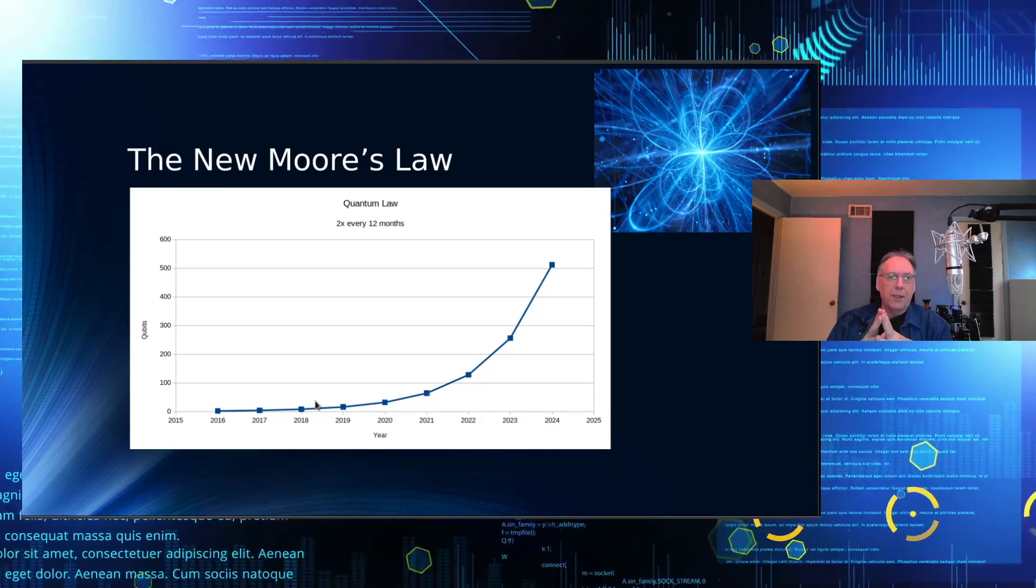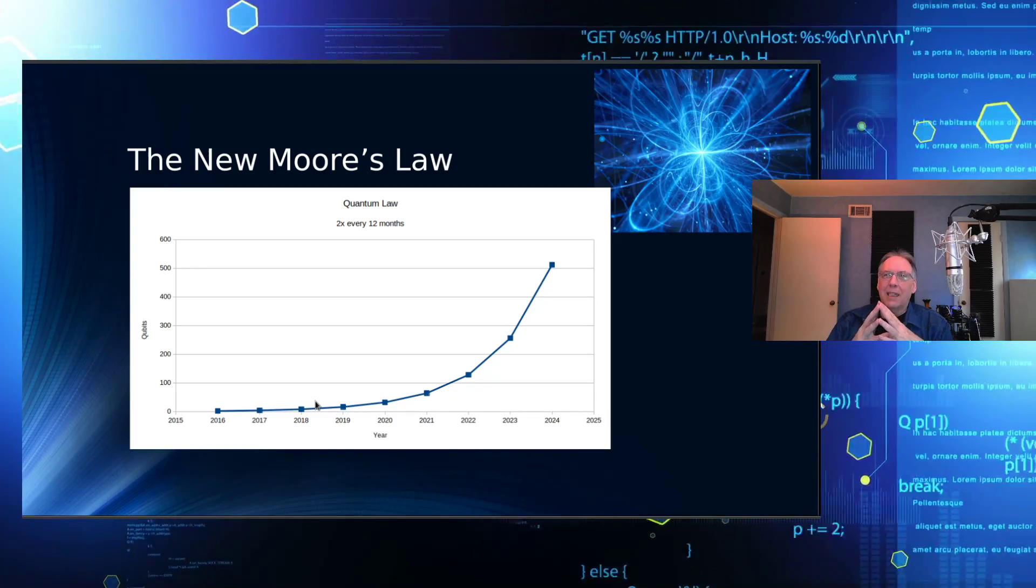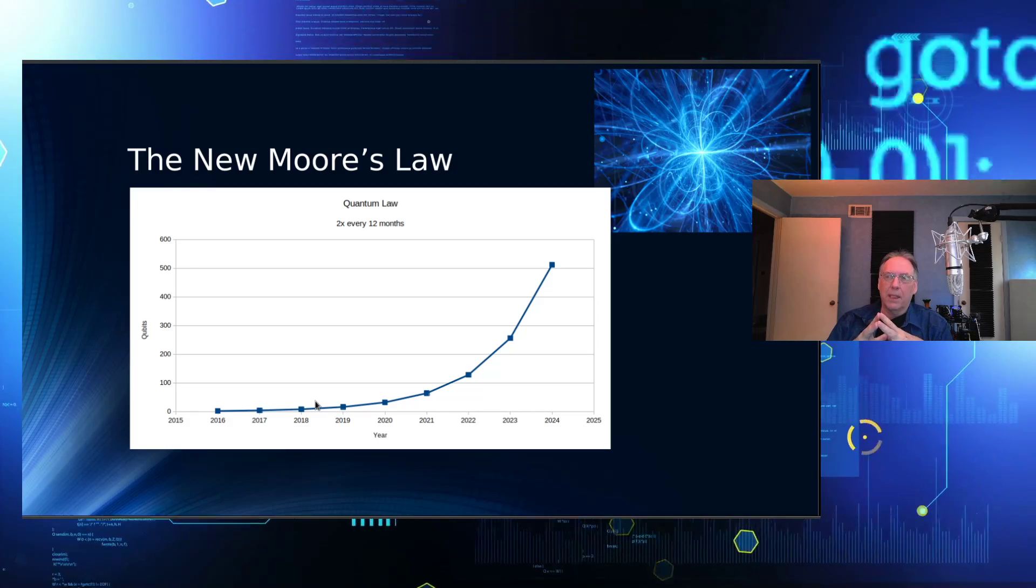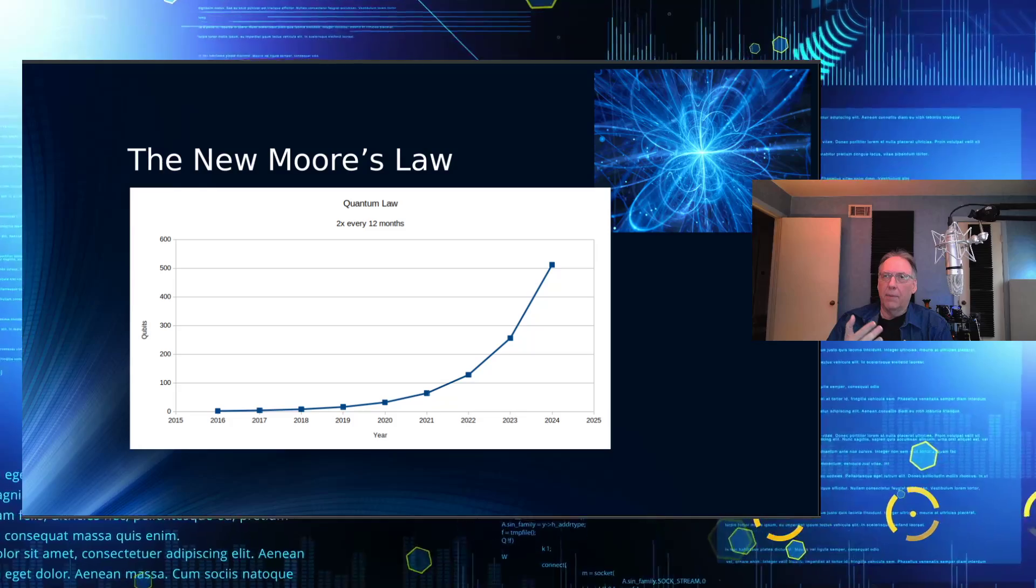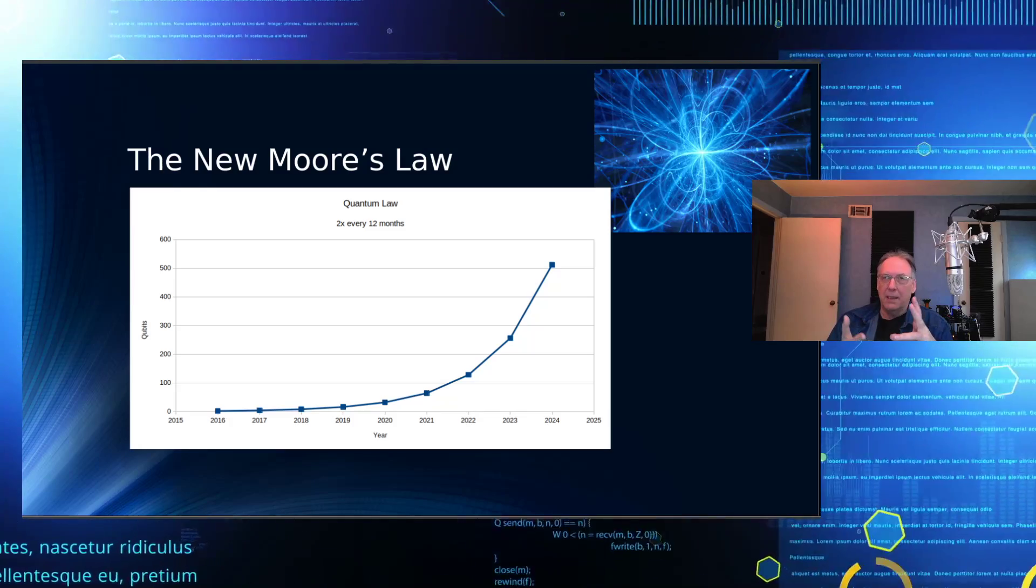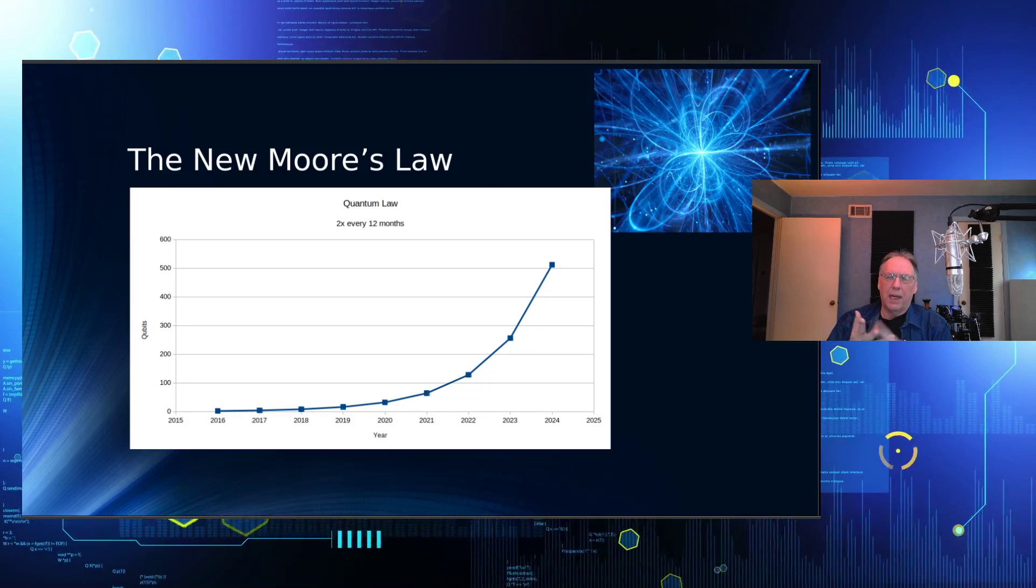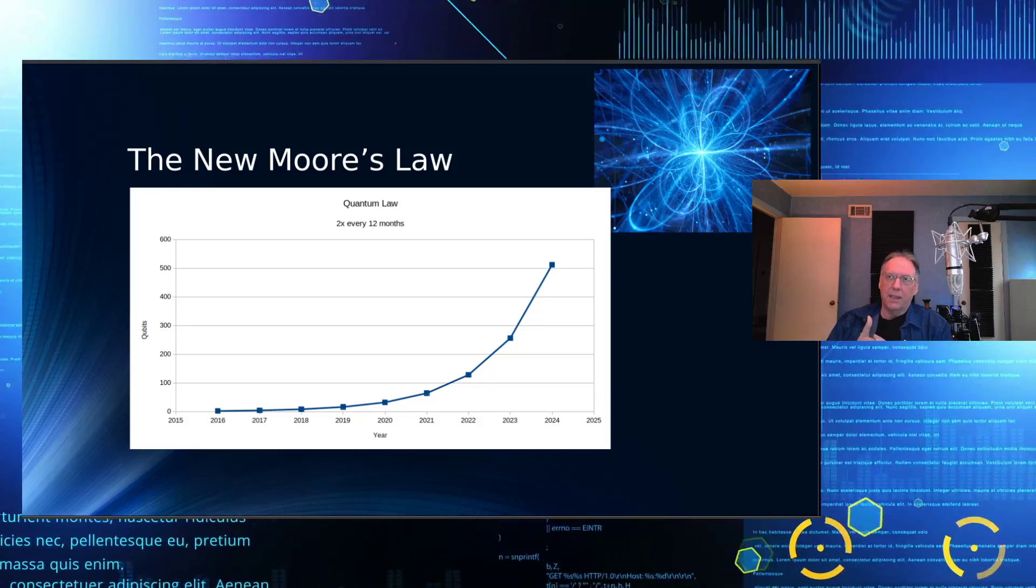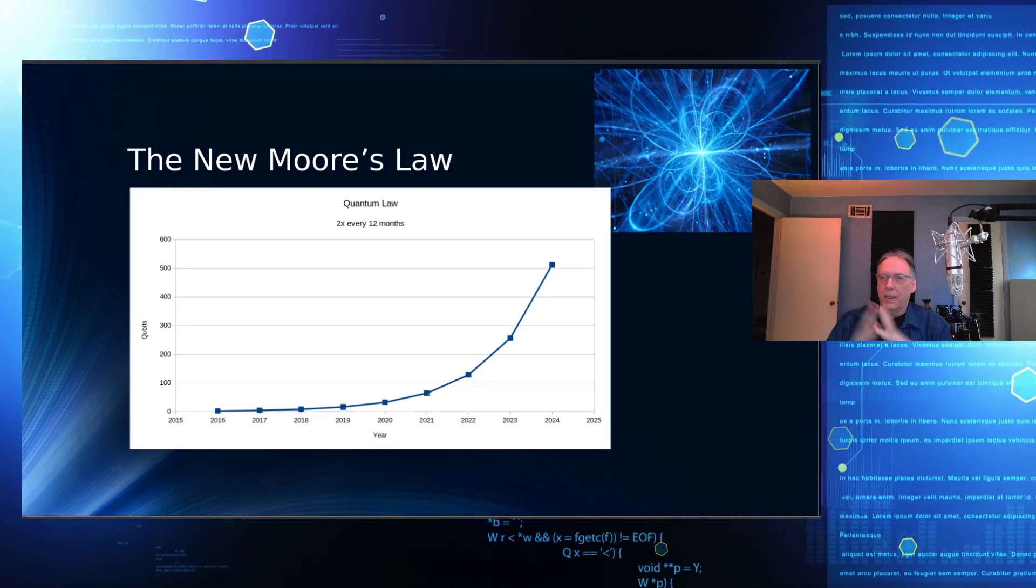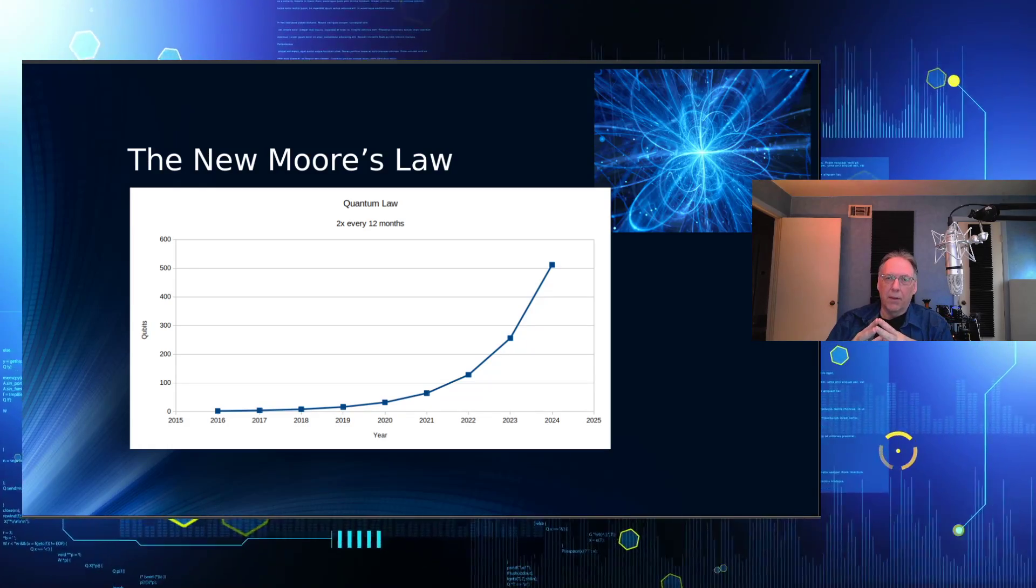So the new Moore's law is that currently quantum is doubling every 12 months. So the number of qubits that they started out with was five, and then they went to seven. And I think the current one that IBM has is 16. Of course, MIT has their 18. And then the next one up will be 32. And then 64, 128-bit, all the way up.